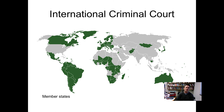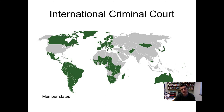Many of these ad hoc tribunals are very expensive, take a long time, and as the name implies, are ad hoc — always being set up after war has occurred and the international community has intervened. So we've established the International Criminal Court, the ICC. You can see the member states and notably who is not part of it — that, of course, includes the United States as the most powerful and important Western country.